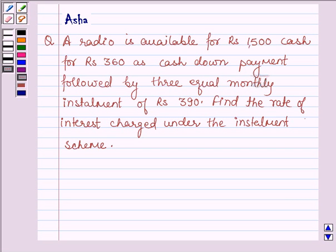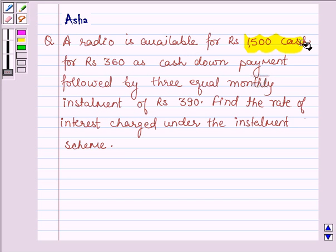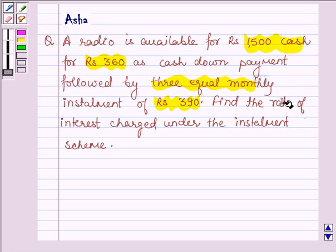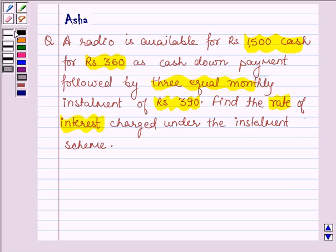Hello and welcome to the session. The given question says a radio is available for Rs. 1500 cash or for Rs. 360 cashed on payment followed by 3 equal monthly installments of Rs. 390. Find the rate of interest charged under the installment scheme.